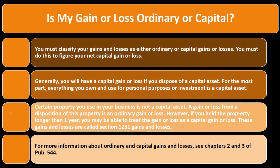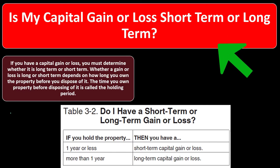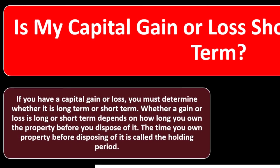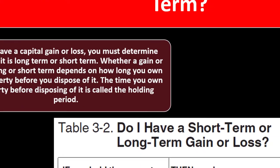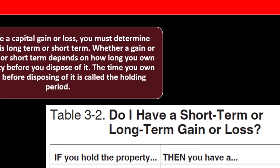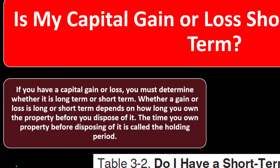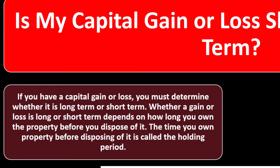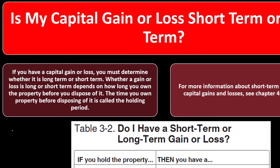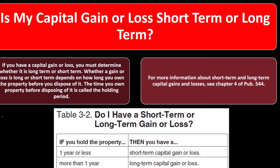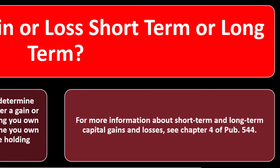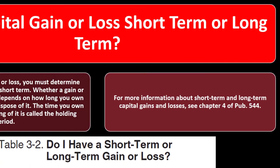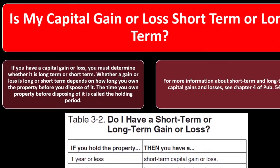Is your capital gain or loss short-term or long-term? This matters because of different tax treatment. Long-term capital gains are typically better — possibly subject to favorable lower tax rates. Short-term capital gains may be subject to ordinary income rates. Whether a gain or loss is long-term or short-term depends on how long you owned the property before disposing of it — called the holding period. Generally: held one year or less means short-term; held more than one year means long-term. Long-term is typically better for taxes.